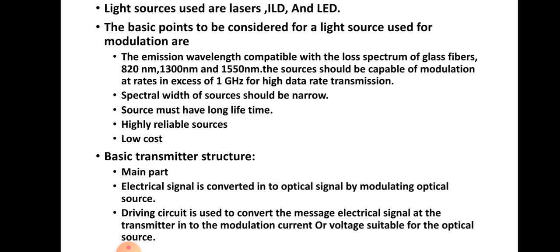The average emitted power of the source needed is a few milliwatts, and the radiance of the source should be as high as possible. Also, the sources must have long lifetime, should be highly reliable, and should be reasonably low cost. These are the features needed for an optical source used in communication. The transmitter is the main part of the optical communication system — in the transmitter, the electrical signal is converted into optical signals by the modulation of the optical source.